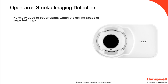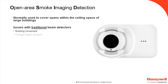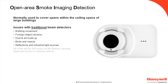Beam detection is normally used to cover large open spans within the ceiling space of buildings. Traditional beam detectors with a single photo receiver are typically susceptible to well-known issues. These range from building movement, foreign object intrusion, dust and dirt build-up, birds and insects, and reflections and industrial light sources.